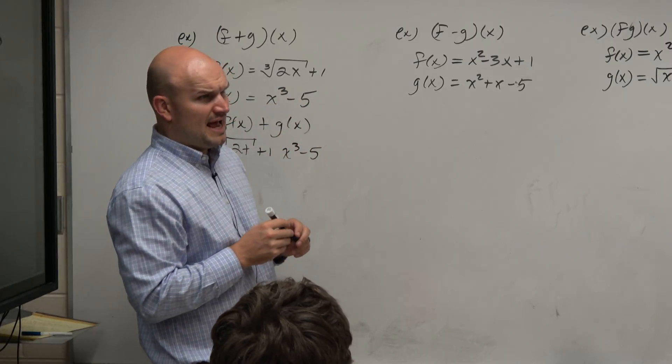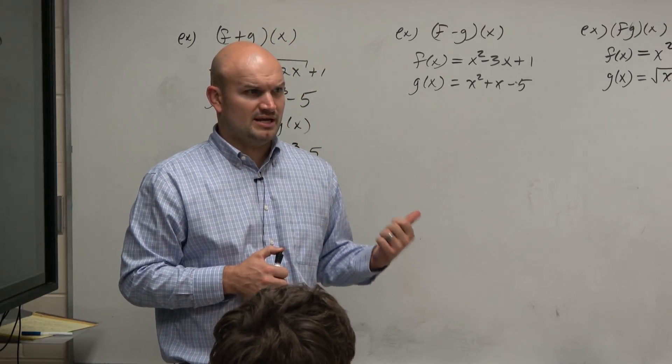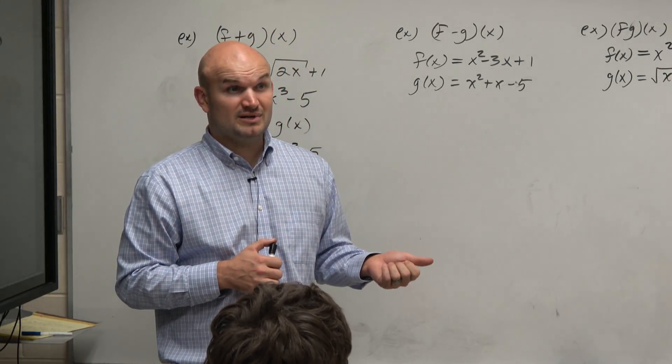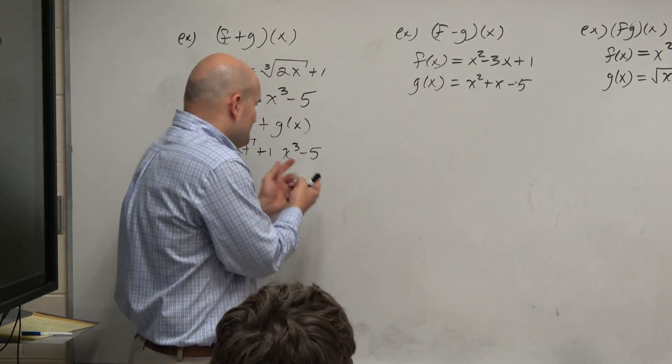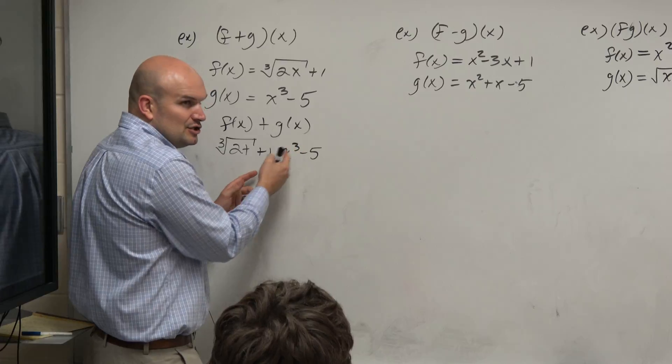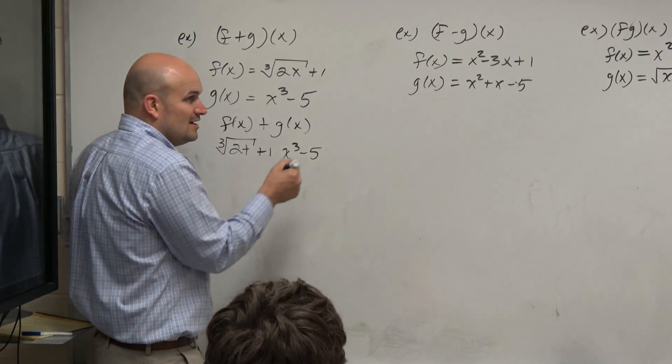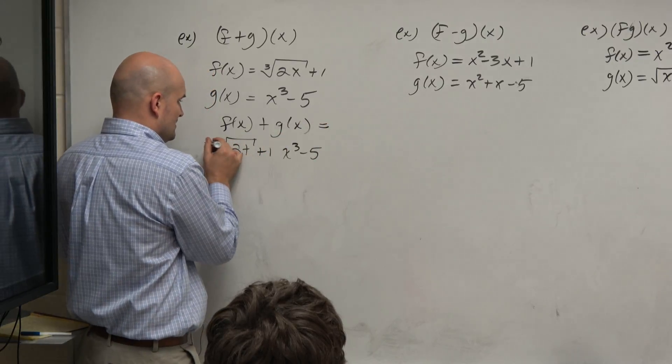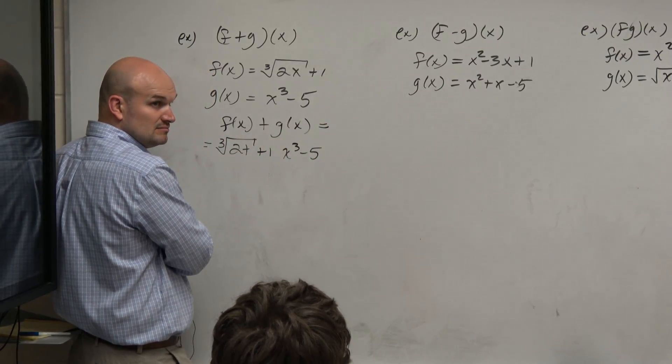Now, have you guys learned how to add cube roots and x cubed? Did we talk about it yet in pre-calculus? Well, guess what, guys? They're not like terms. You can't combine an x cubed and a cube root. Can't do it. You never learned it because there's nothing more we can do with that. So we can't combine these. But can we add 1 and negative 5? Yes, OK, good.